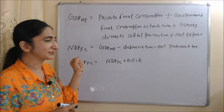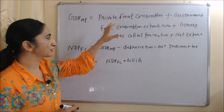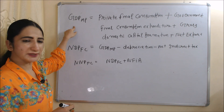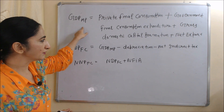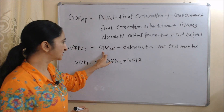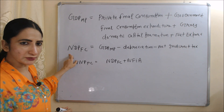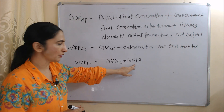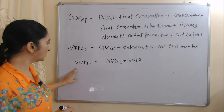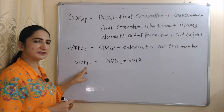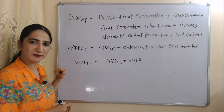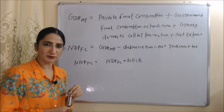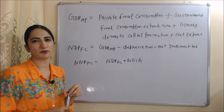When we add all components of final expenditure — private final consumption, government final consumption, gross domestic capital formation, and net export — it becomes GDP at MP. When we subtract net indirect tax and depreciation from GDP at MP, it becomes NDP at FC. Then adding net factor income from abroad gives NNP at FC, which is our national income — net national product at factor cost. So this is all about concept and measurement of national income. Thank you so much for watching this video.